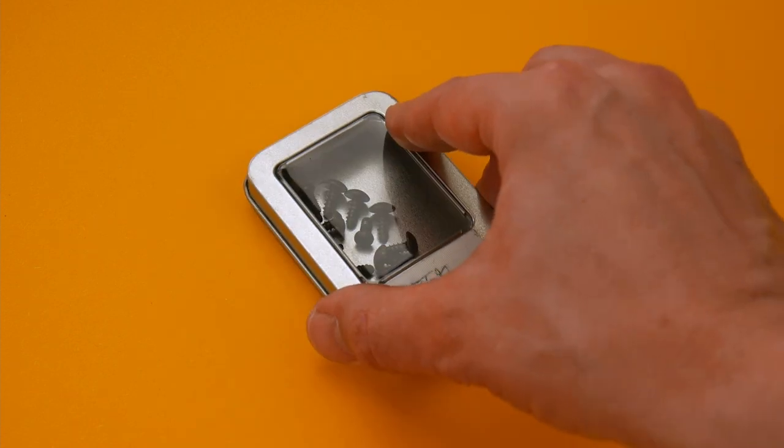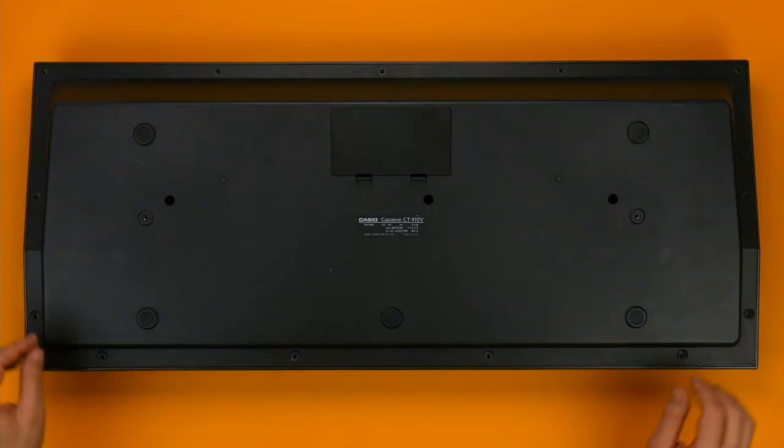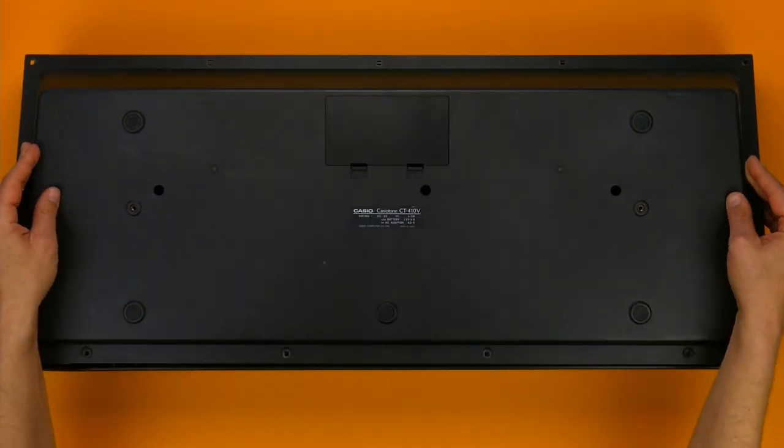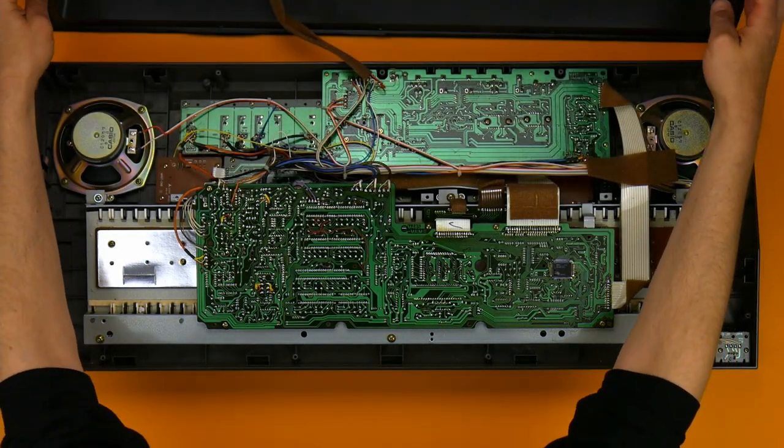I recommend to keep everything organized. This will pay out when it comes to reassembling. Now comes the moment to lift the bottom piece. If we are lucky, there's nothing attached to it. But most often it is at least connected to the battery compartment. Also this time.